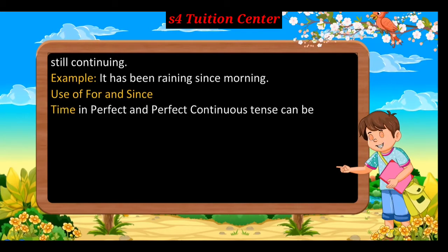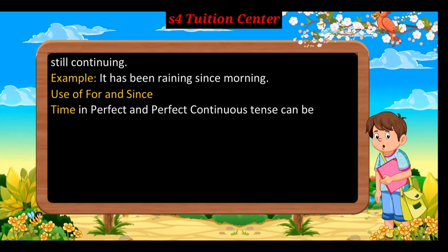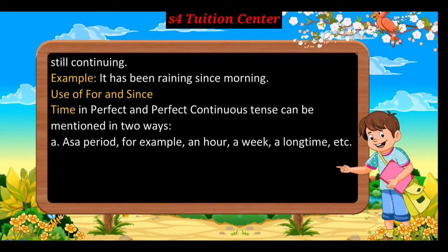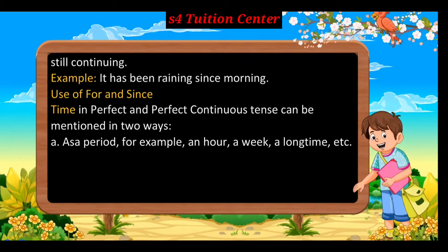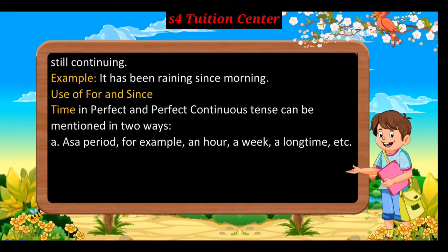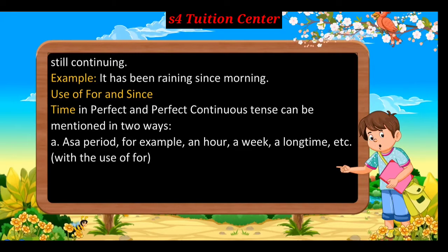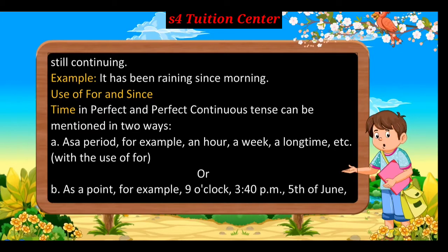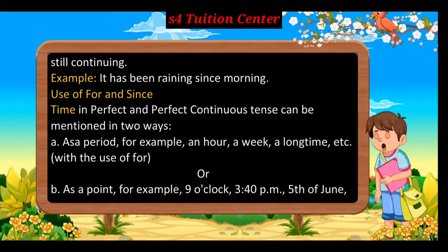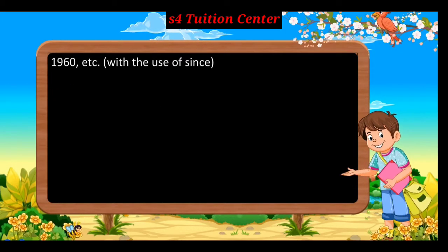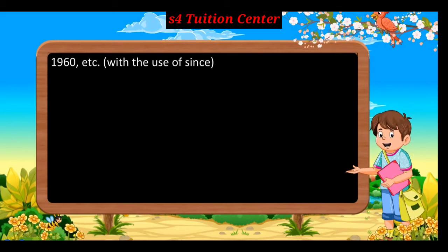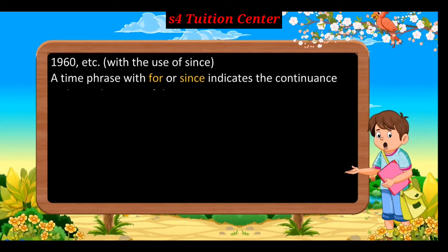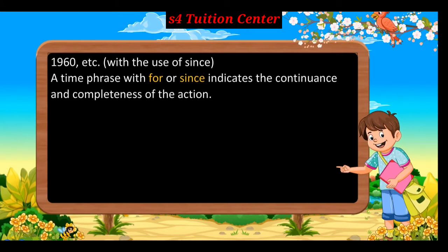Use of For and Since: Time in perfect and perfect continuous tense can be mentioned in two ways — a) as a period, e.g., an hour, a week, a long time, etc., with the use of 'for'; b) as a point, e.g., 9 o'clock, 3:40 pm, 5th of June, 1960, etc., with the use of 'since'. A time phrase with 'for' or 'since' indicates the continuance and completeness of the action.